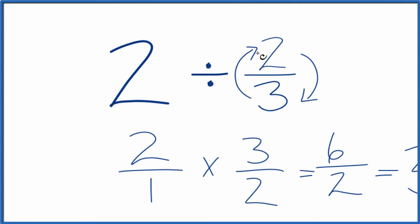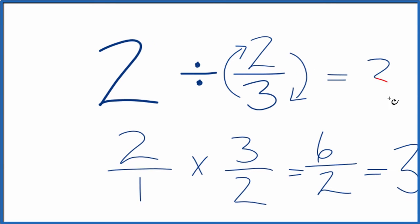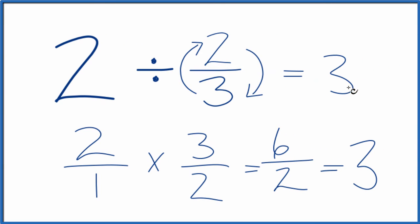When we divide two by two-thirds, we end up with three. And we can check our work. If we multiply three times two-thirds, we should get two if we did this correctly. Let's try that.